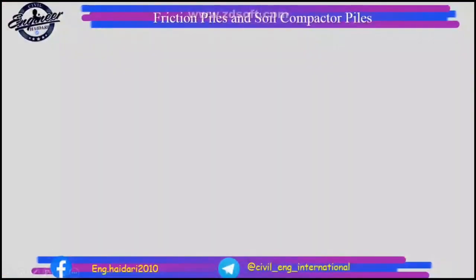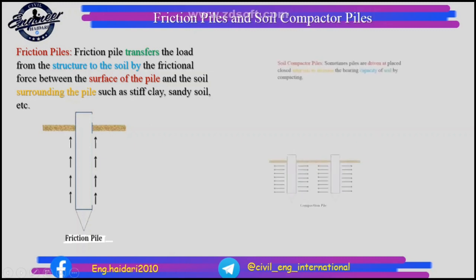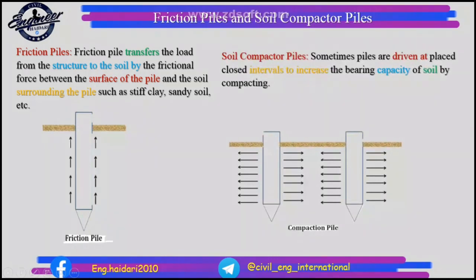Friction piles: a friction pile transfers the load from the structure to the soil by the frictional force between the surface of the pile and the surrounding soil, such as stiff clay or sandy soil. Soil compactor piles: sometimes piles are driven at close intervals to increase the bearing capacity of soil by compacting.